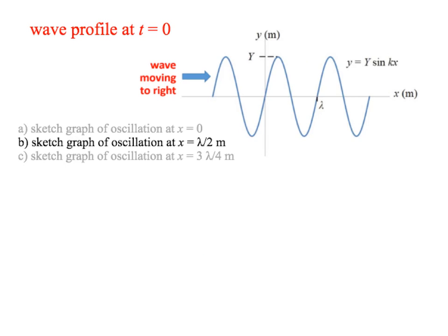So, for part B, we want the graph of the oscillation at the point on the wave where x equals lambda over 2. So, half a wavelength along from where we were before.